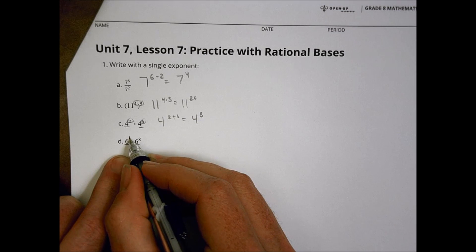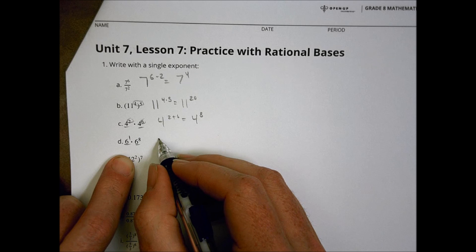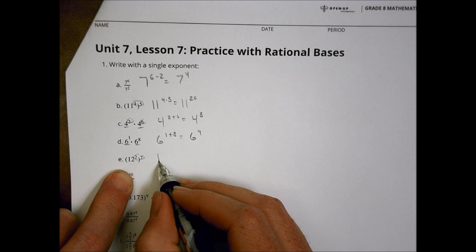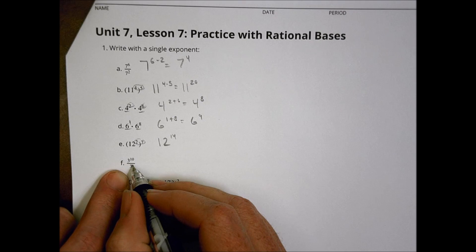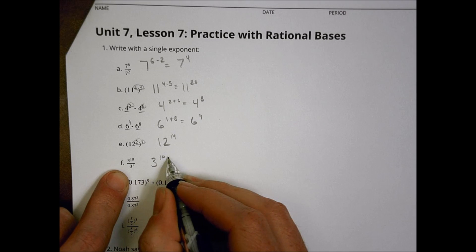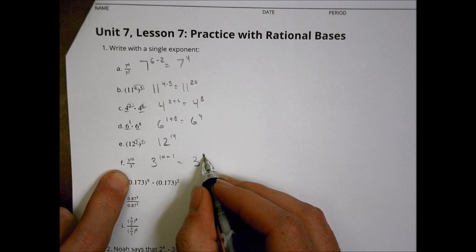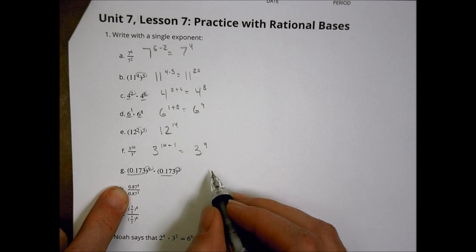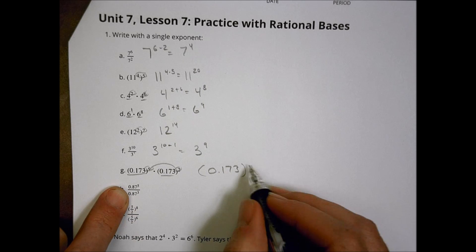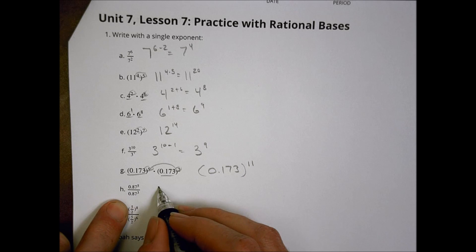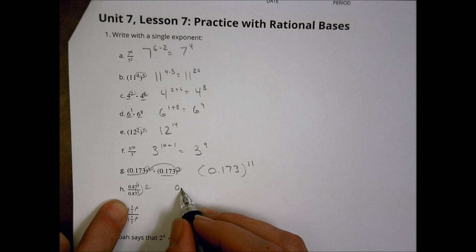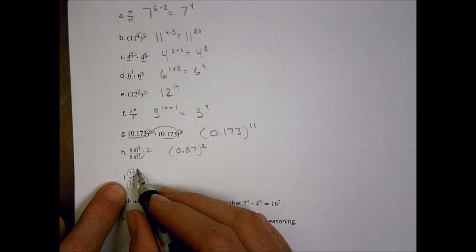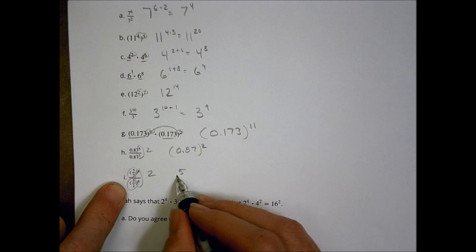Here the base is the same — there's a one there, you can assume it's there — so this is six to the one plus eight, which is six to the ninth power. Here we multiply: twelve to the fourteenth power. There's a one there, so we subtract: three to the ten minus one is three to the ninth power. The base is the same, so we add: 0.173 to the nine plus two is 0.173 to the eleventh. Then five minus three is two, so 0.87 squared. Finally, same base, eight minus six is two — five over two squared.